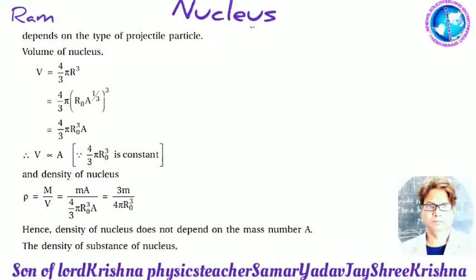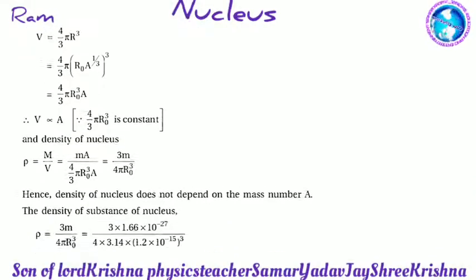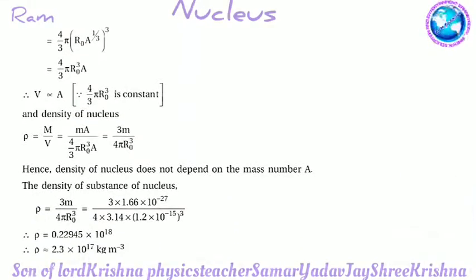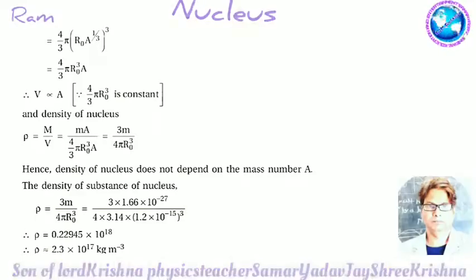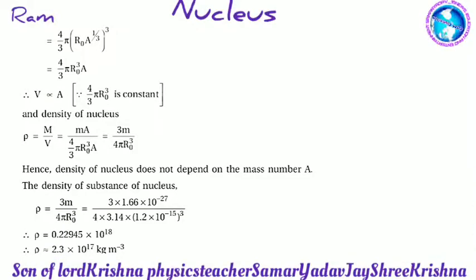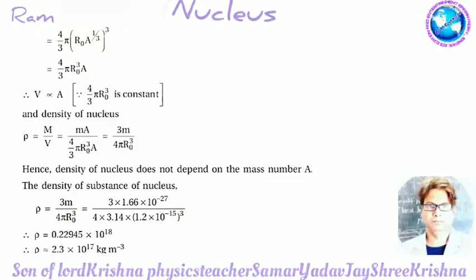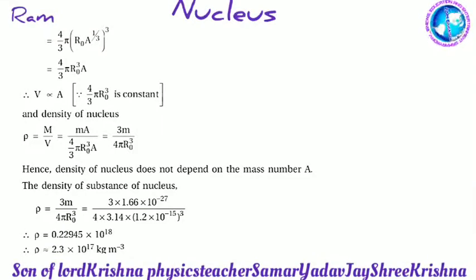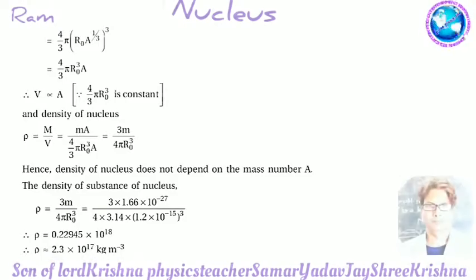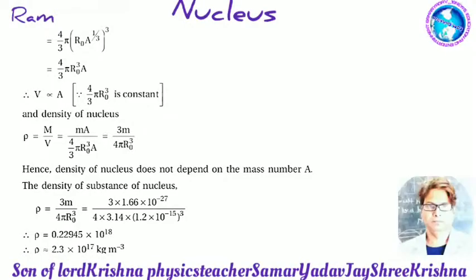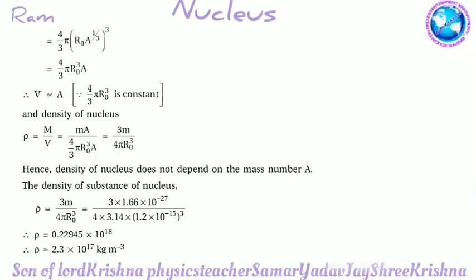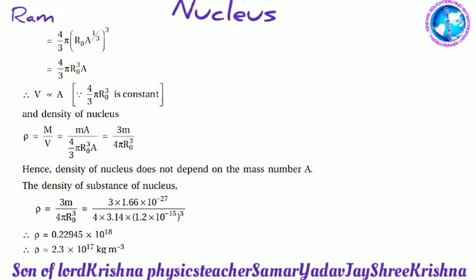The density of the nucleus ρ = mass/volume = mA / [(4/3)πR₀³A] = 3m / (4πR₀³). Hence the density of the nucleus does not depend on the mass number A.